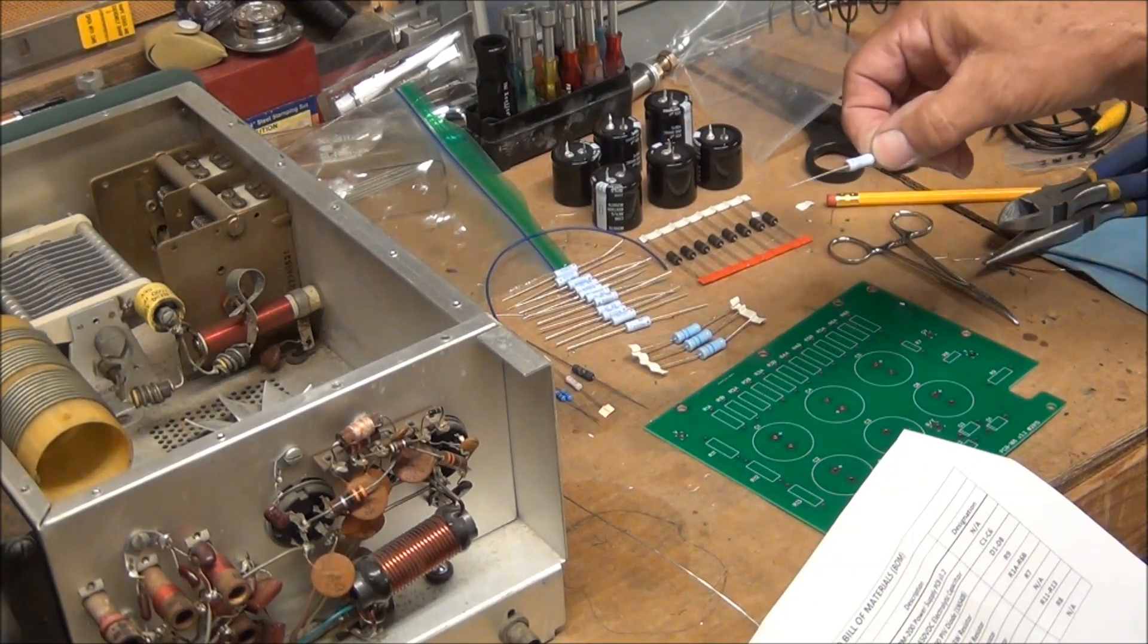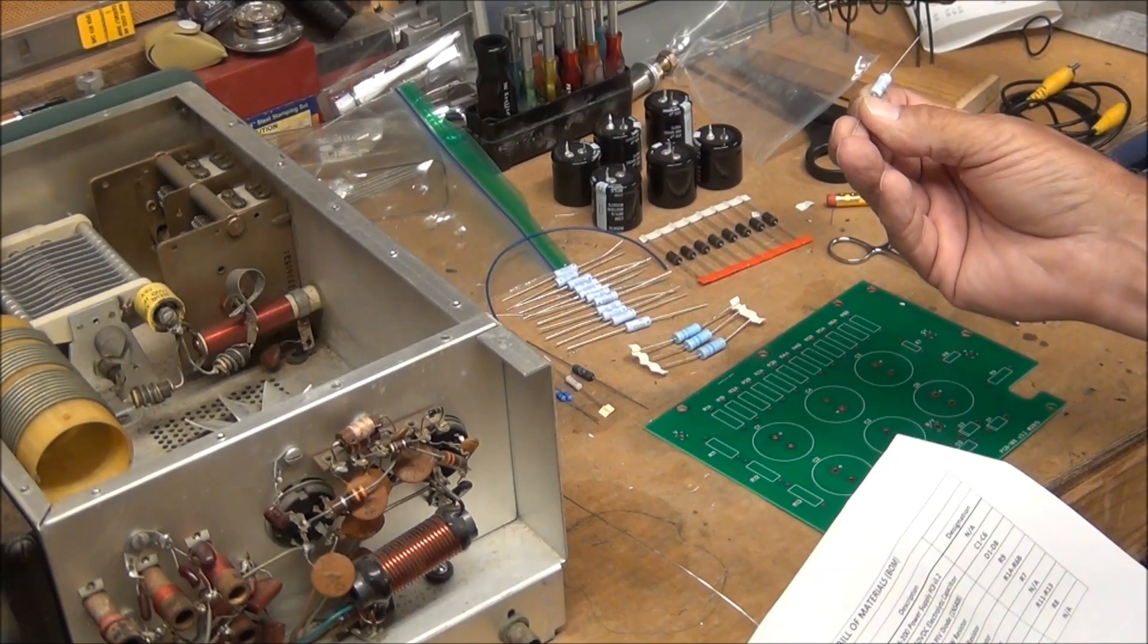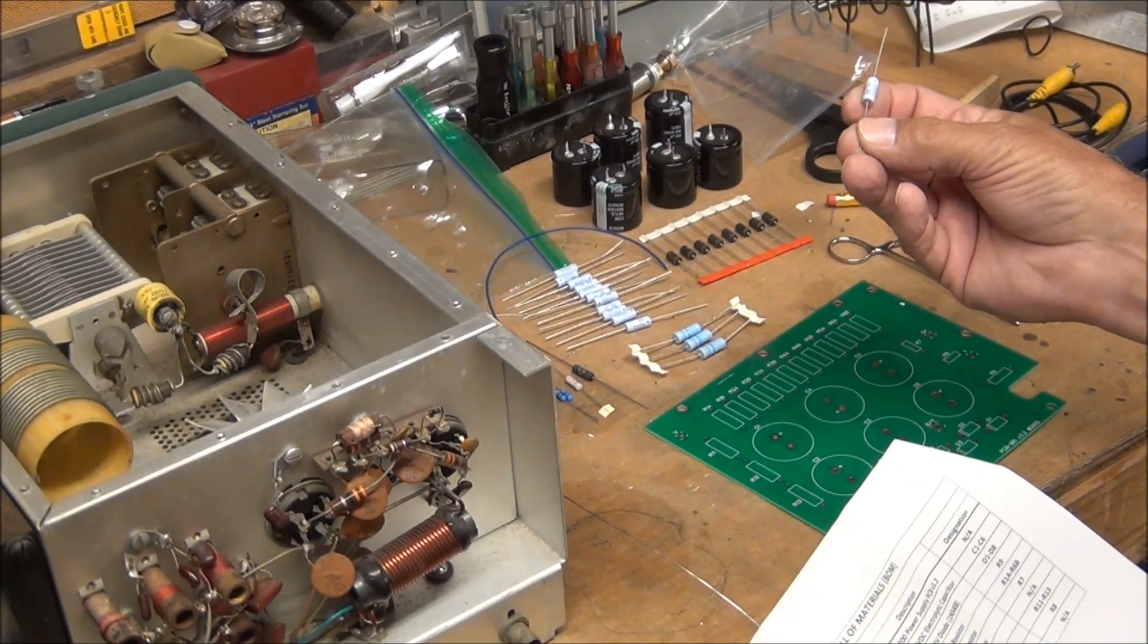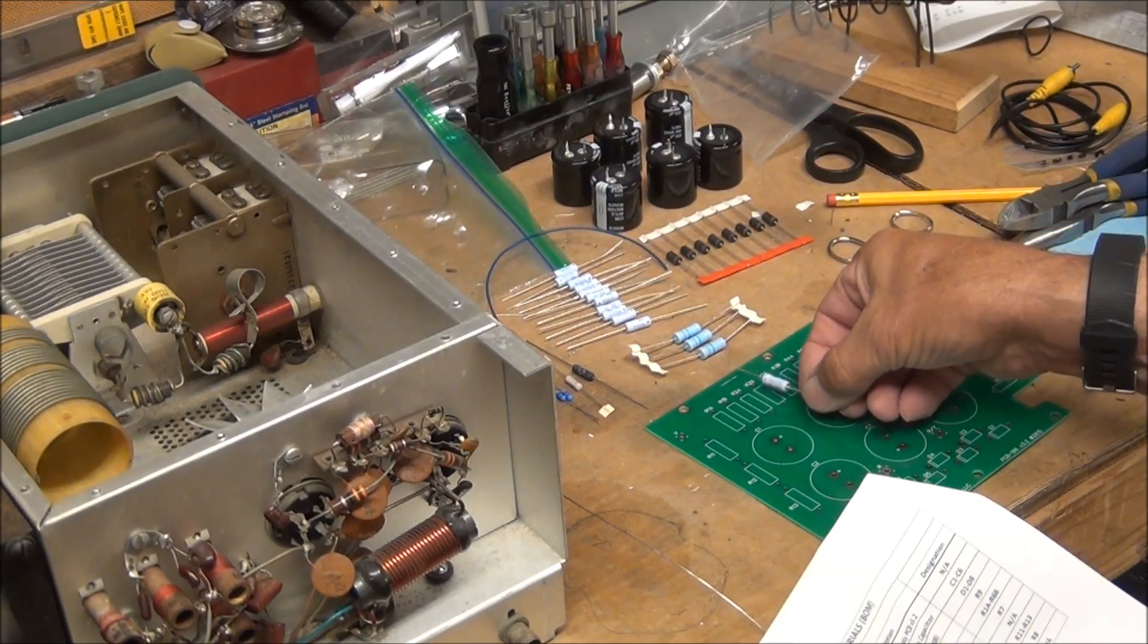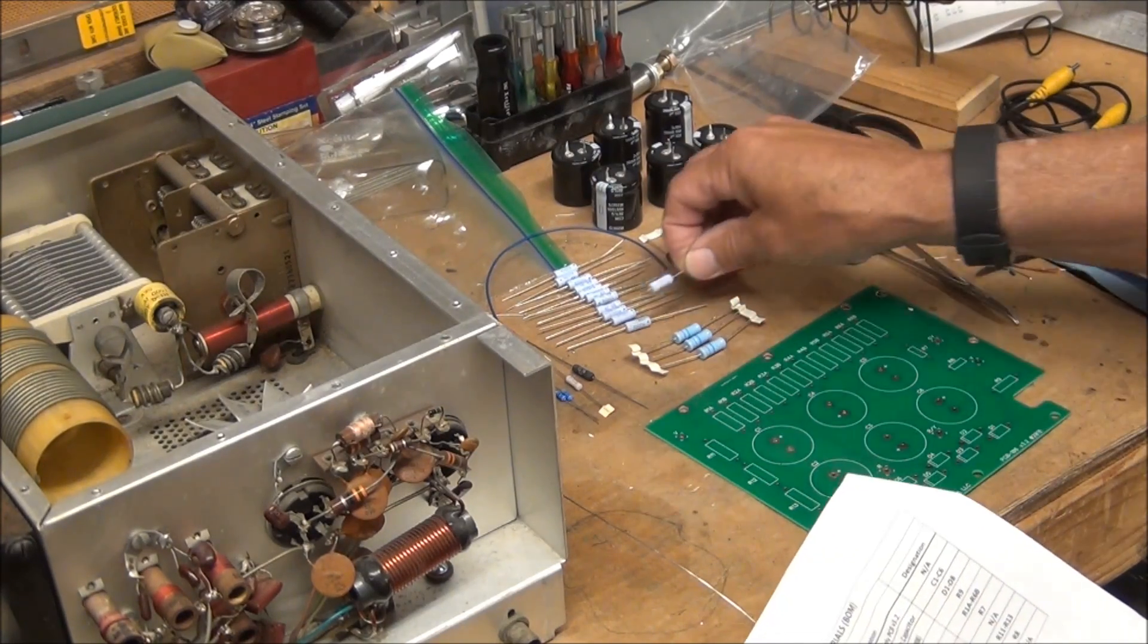They're all flush mount except for these resistors, which are 3 watt resistors that are 82k ohm each. They are supposed to be spaced about a quarter inch above the board, probably for heat dissipation.